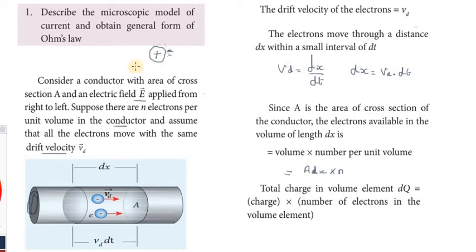The electric field is applied right to left. Suppose there are n electrons per unit volume in this conductor. The conductor is referred to as having n electrons in the conductor.